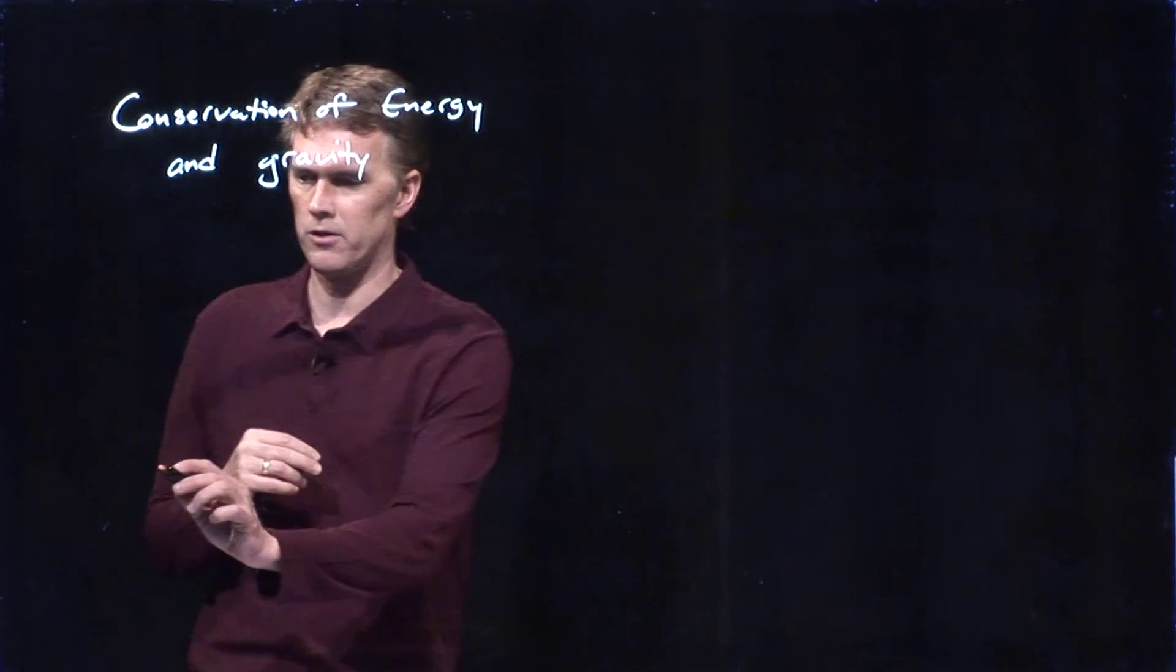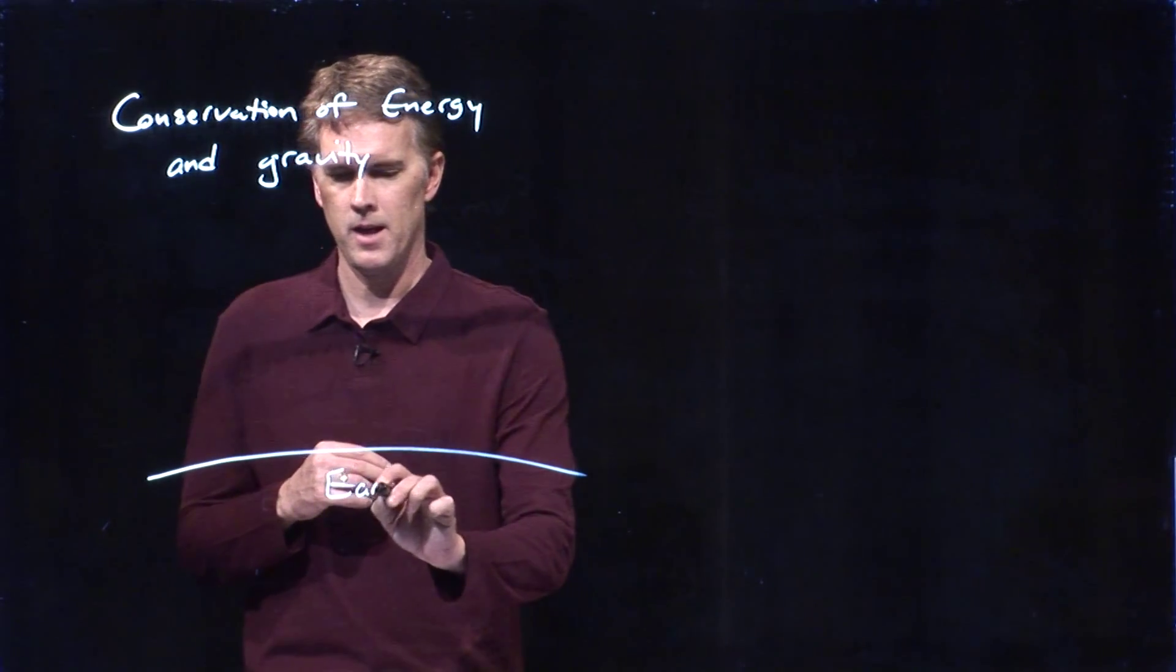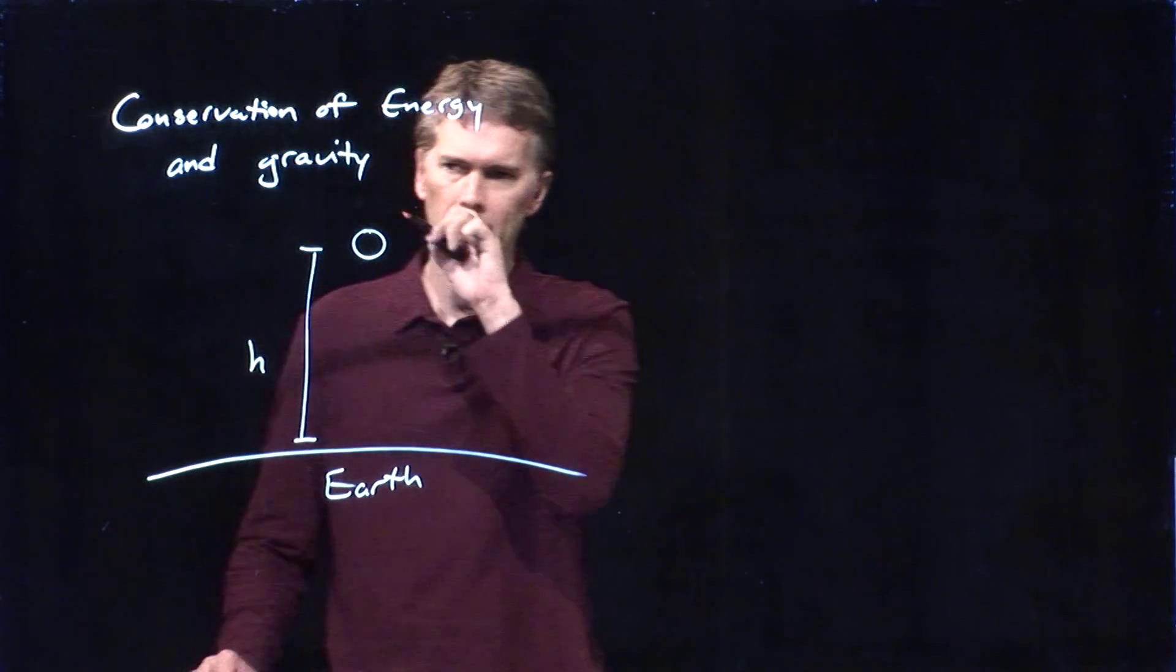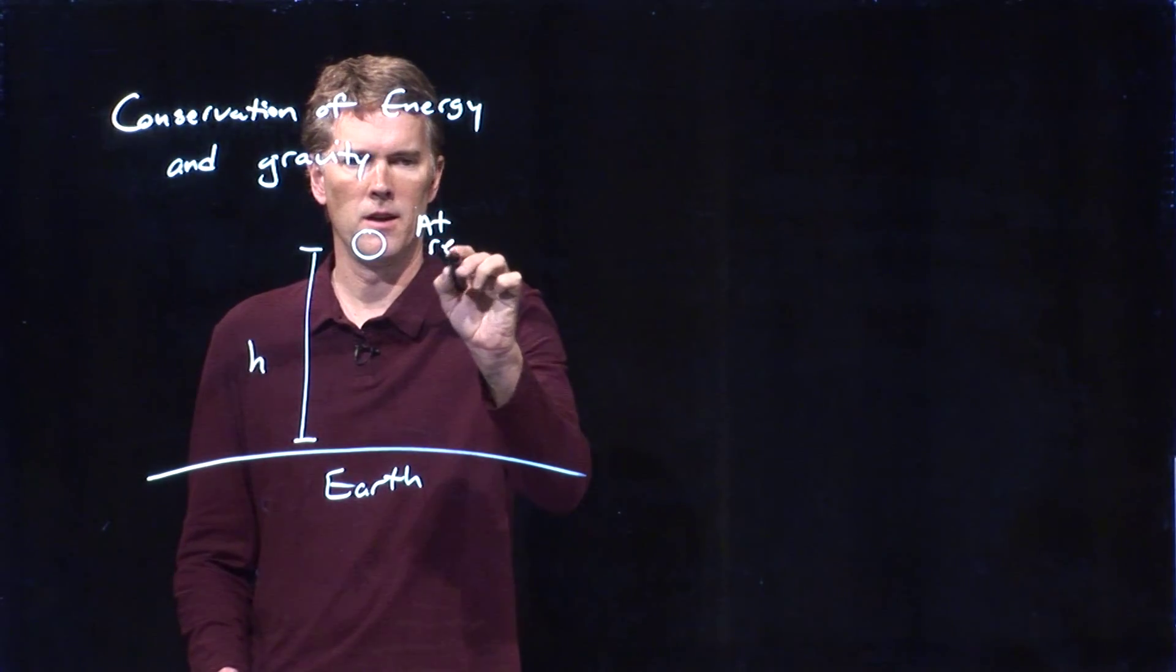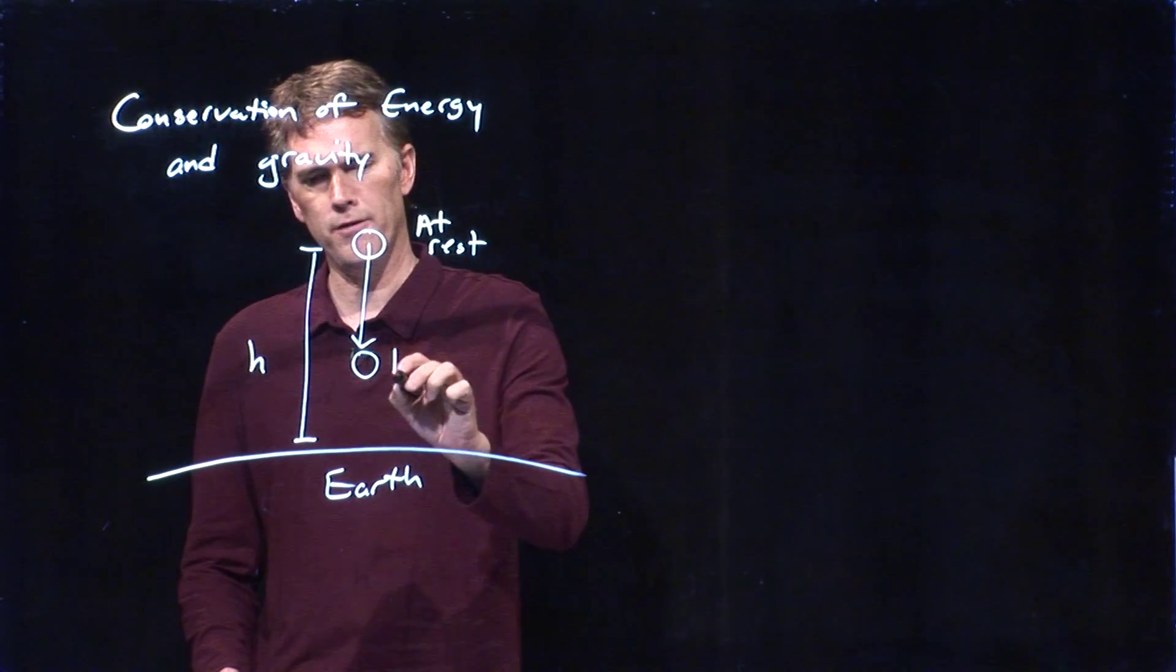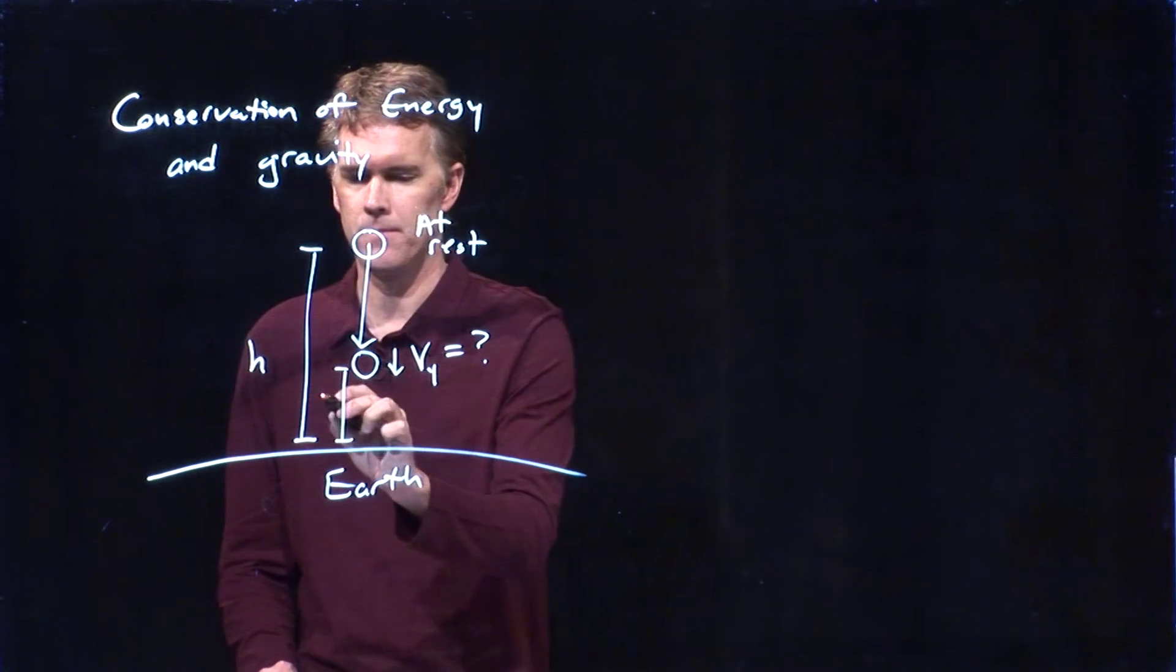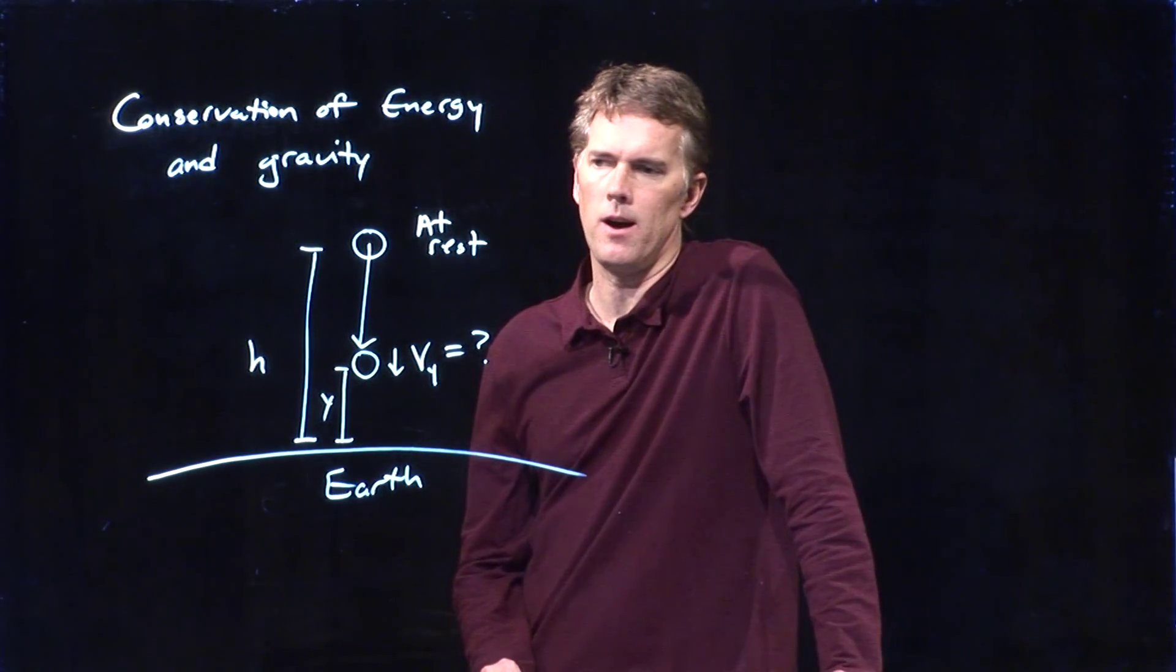So let's say we're going to do the following experiment. Here we have the surface of the earth and now we're going to stick an object up here at a height h and we're going to let that object fall. It's going to start at rest and now it's going to fall and we want to know how fast is it moving at some other height which we will call y.